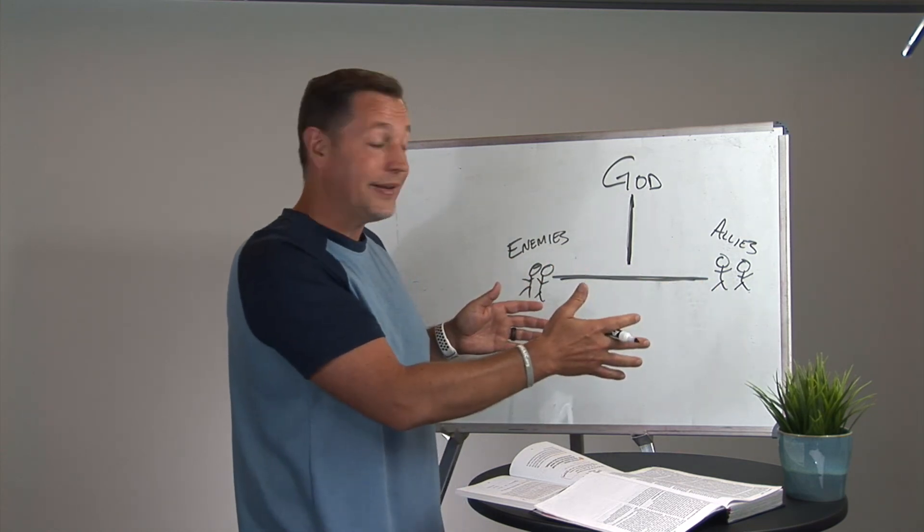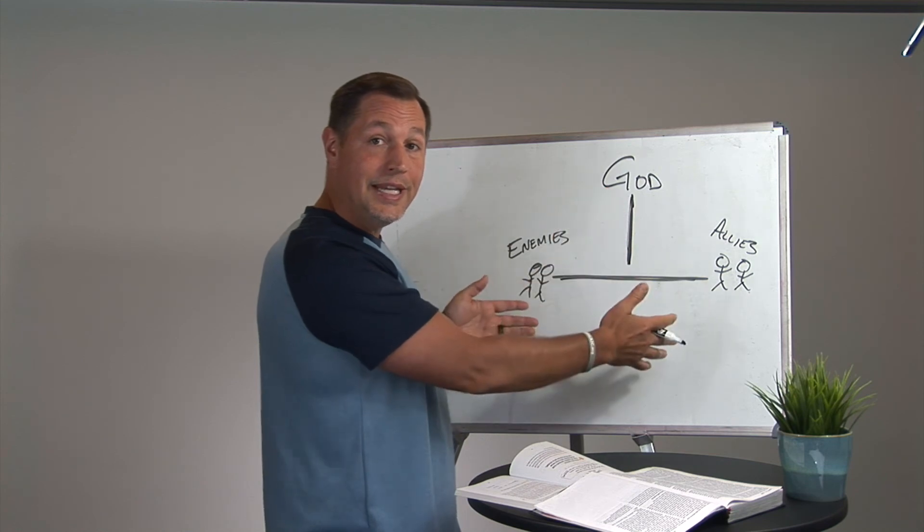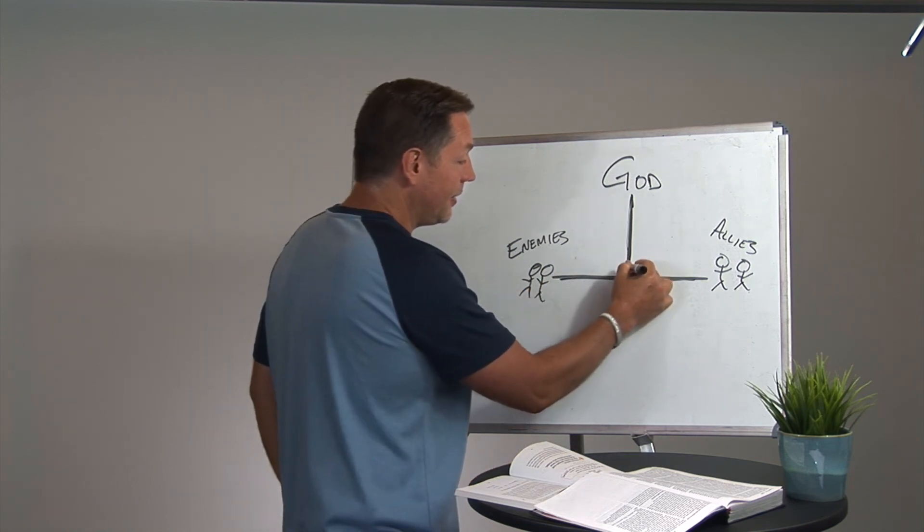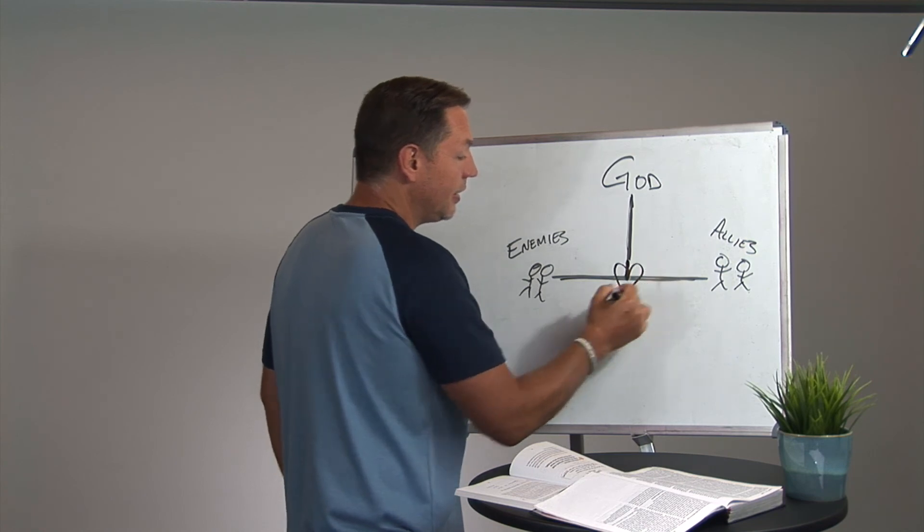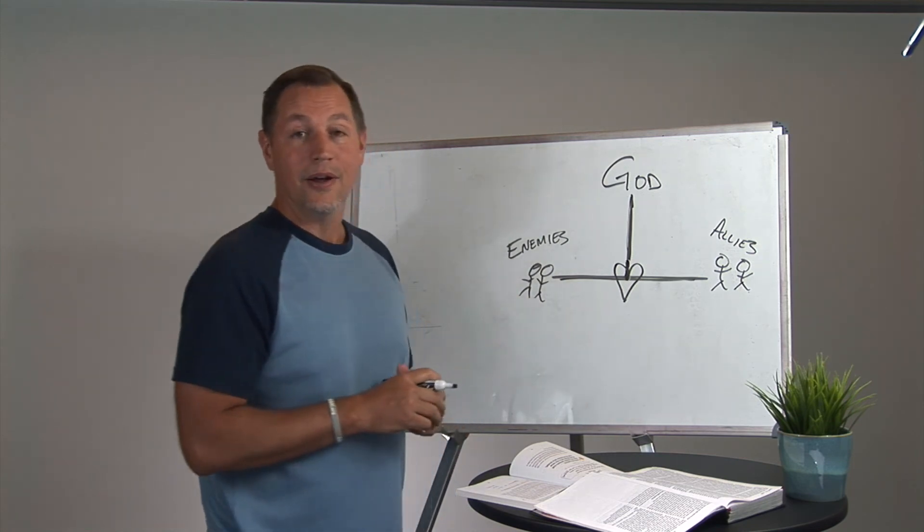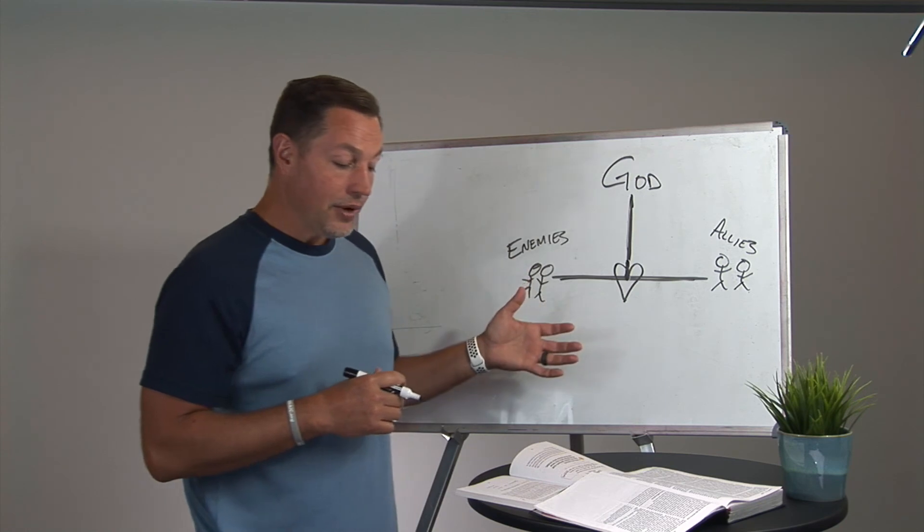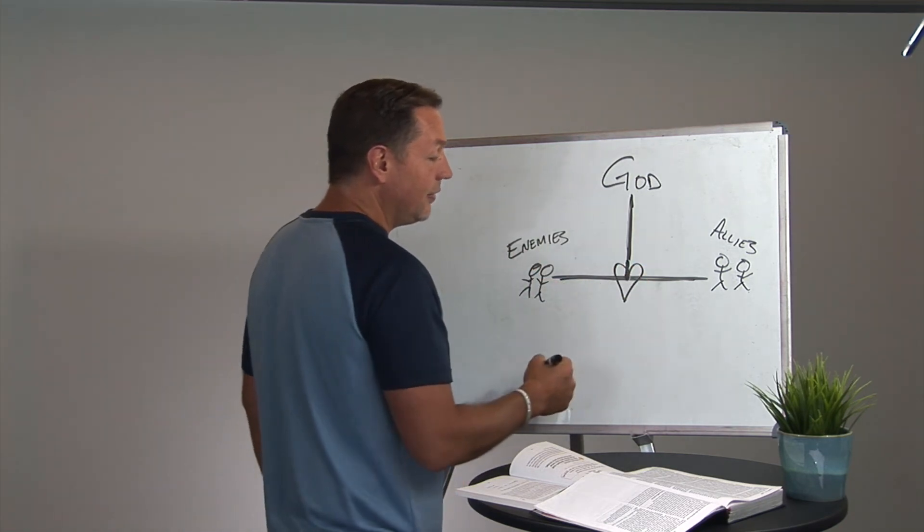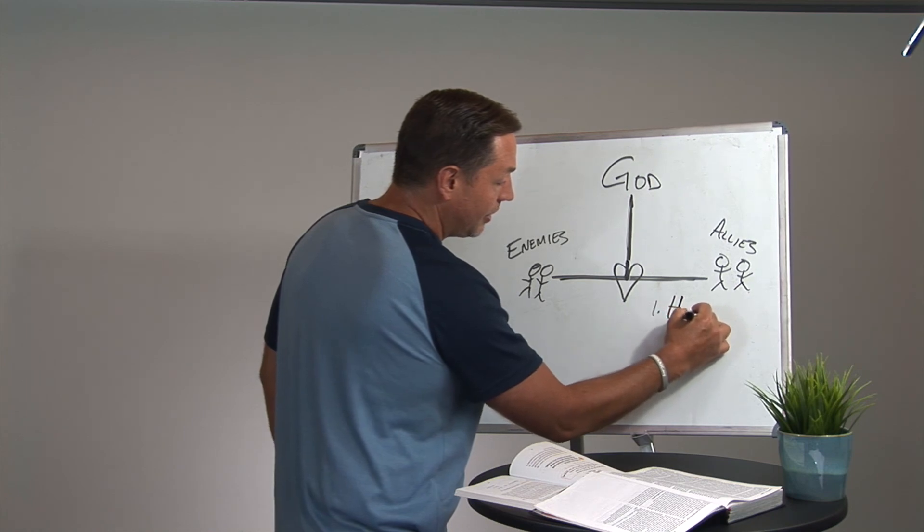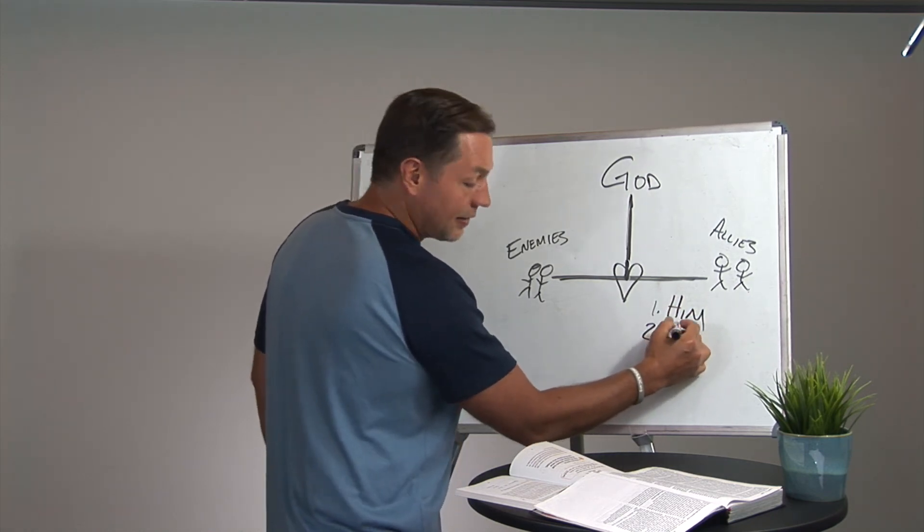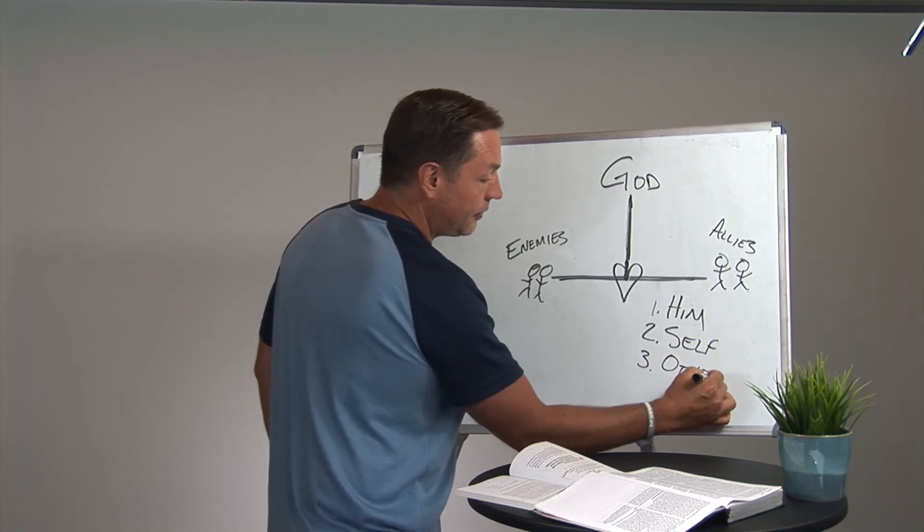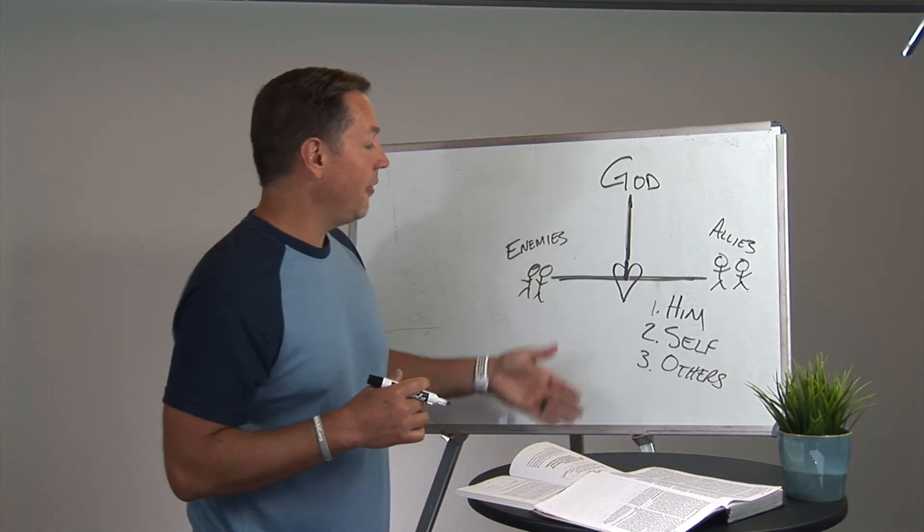As 1 John 4, verse 20 says, if you cannot love those who are seen that are created in God's image, then you do not love God who you cannot see. And so right here at this intersection is where we really figure out where our love lands and how important God is in our love equation. And so there's really three ways that we can show God that we're devoted to Him, that we really love Him. The first way we show that is that we love Him. The second way is that we love ourself. And the third way is that we love others. And we have to have all three of these.